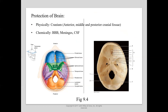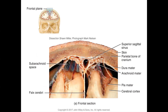Chemical protection is provided by the blood-brain barrier, the meninges, and the cerebrospinal fluid. The three meninges — dura mater, arachnoid mater, and pia mater — surround both the brain and spinal cord. The dura mater is the outermost layer and itself has two layers: the periosteal layer, tightly adherent to the inner surface of the cranial bone, and the meningeal layer just exterior to the arachnoid mater.